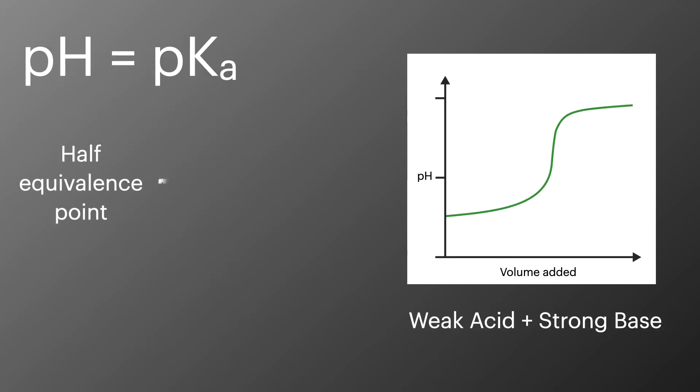The half equivalence point is when half of the acid present has been neutralized. And when adding a strong base to a weak acid, the pH of this point is equal to minus log of Ka, or the pKa value.